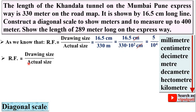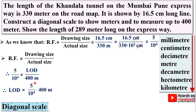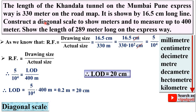Now starting again: RF equals drawing size divided by actual size. Put RF = 5/10⁴. We want to find the drawing size — the length of drawing (LOD), which is the maximum length of the diagonal scale. The scale measures up to 400 meters, so: LOD = (5/10⁴) × 400 meters = 0.2 meters. Since 1 meter = 100 centimeters, the length of drawing equals 20 centimeters.